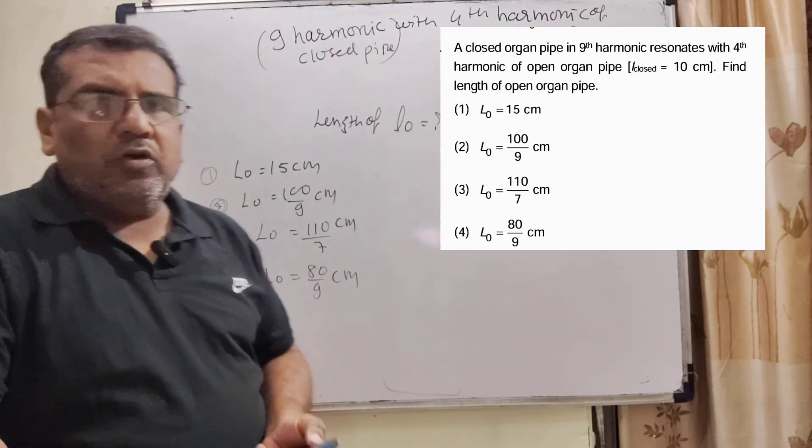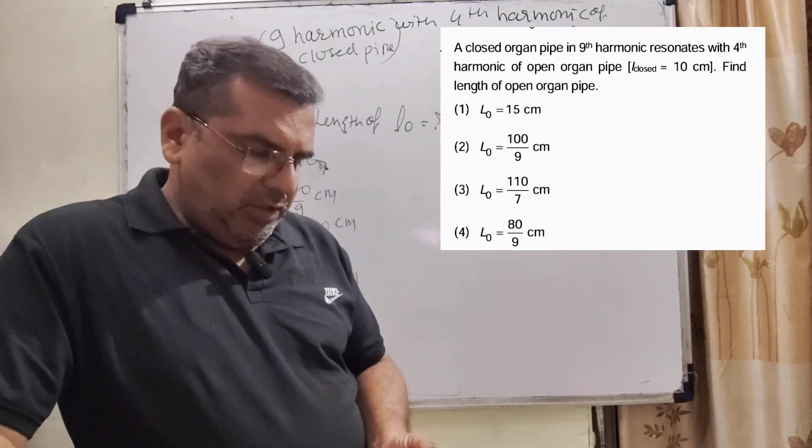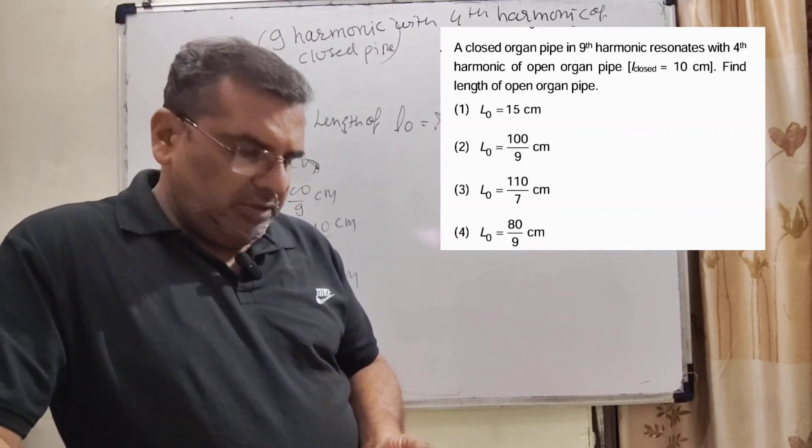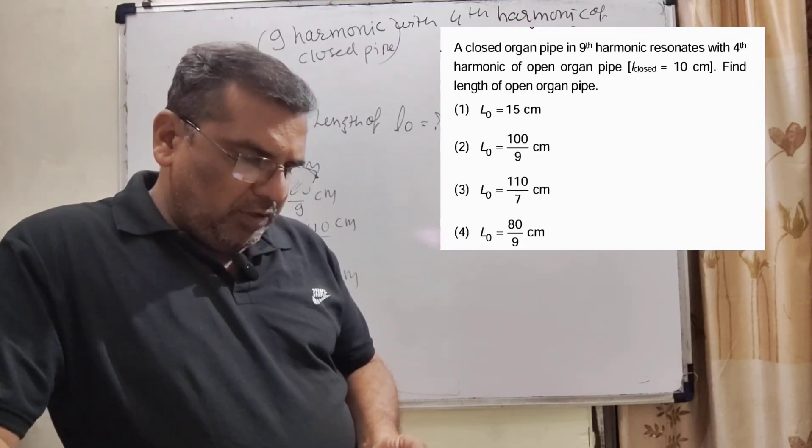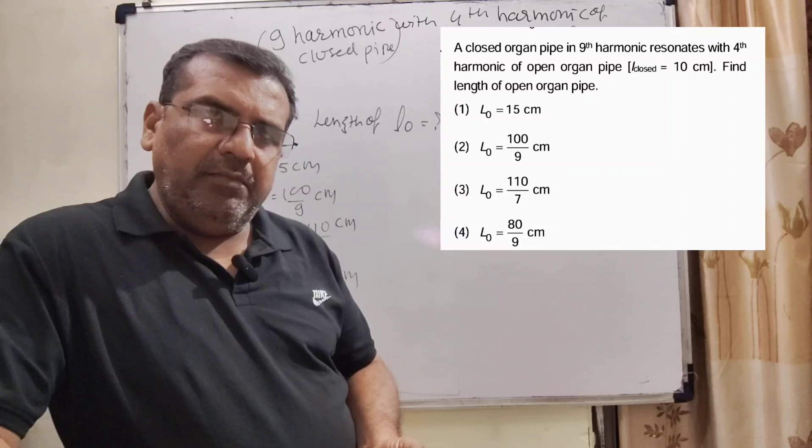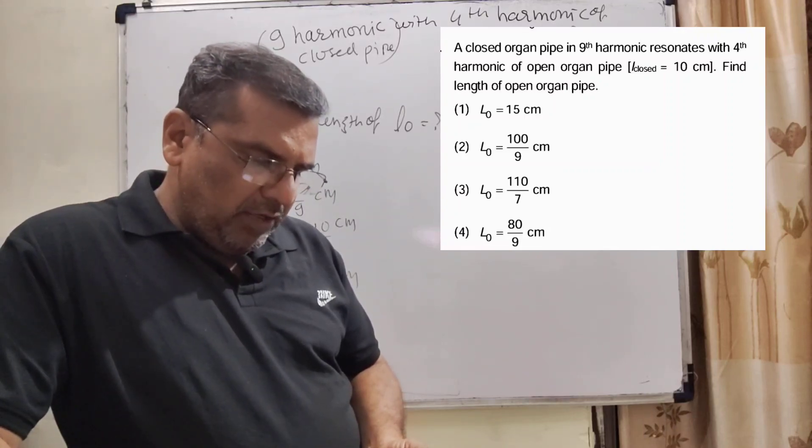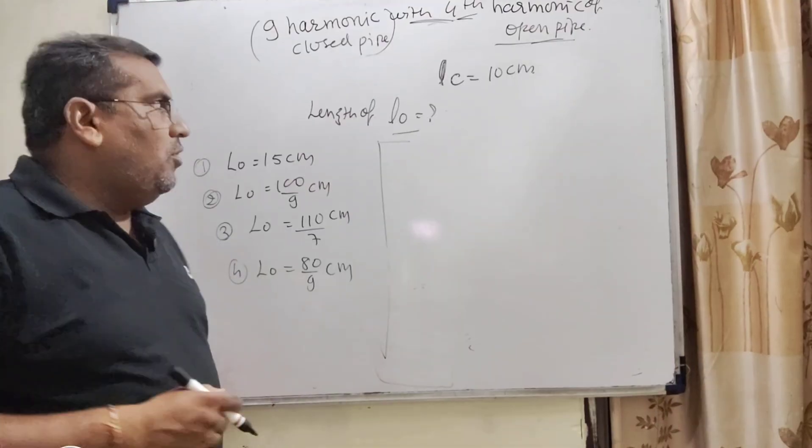Here we have given four options. Option A: L0 = 15 cm. Option B: L0 = 100/9 cm. Option C: L0 = 110/7 cm. And option D: L0 = 80/9 cm.